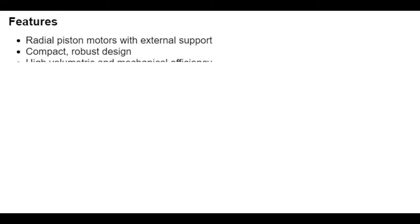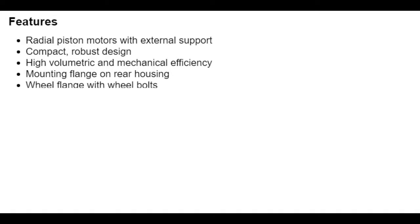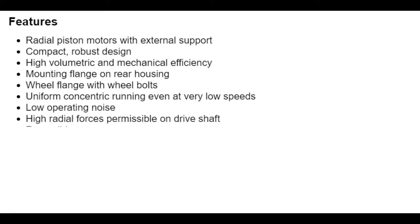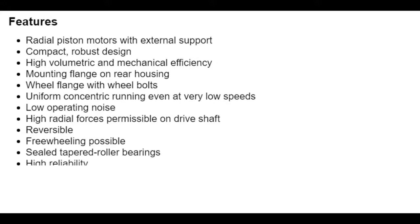Radial piston motors with external support are compact and robust, and have high volumetric and mechanical efficiency. The mounting flange on the rear housing allows the motor to be installed directly on the vehicle chassis. The wheels can be mounted directly to the wheel flange with wheel bolts. Uniform concentric running, even at very low speeds, low operating noise, and absorption of high radial forces on the drive shaft are other benefits of the MCR motor. It is reversible, that is it can rotate clockwise and counter-clockwise, and free wheeling switching is possible. Sealed taper roller bearings keep out dirt and dust, and ensure maximum reliability.